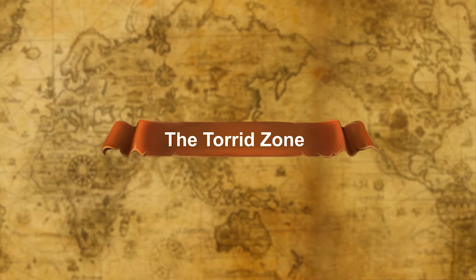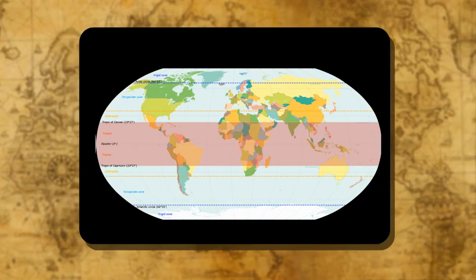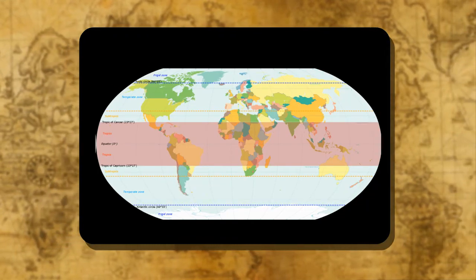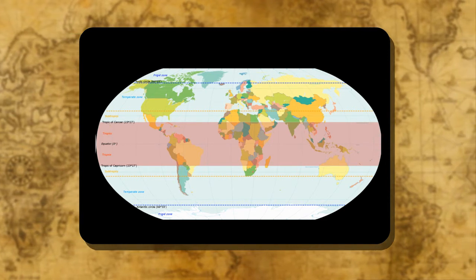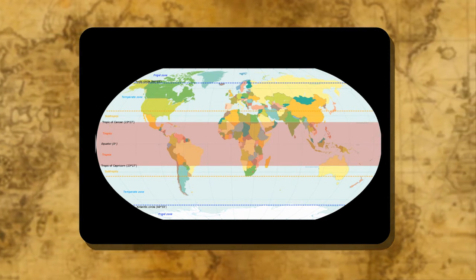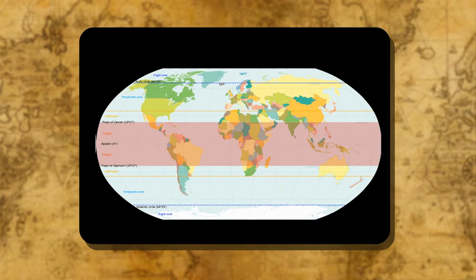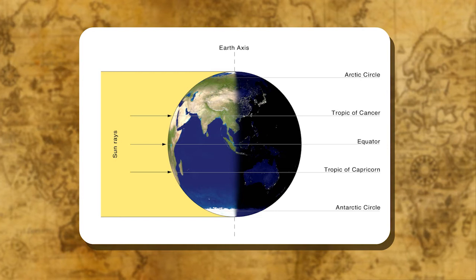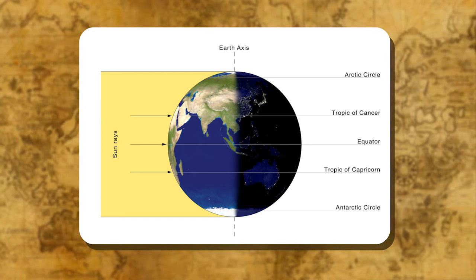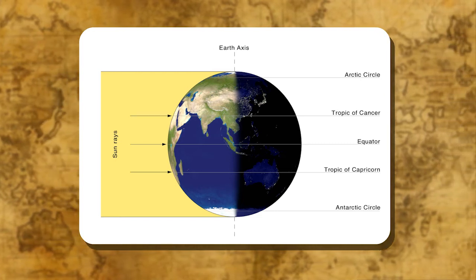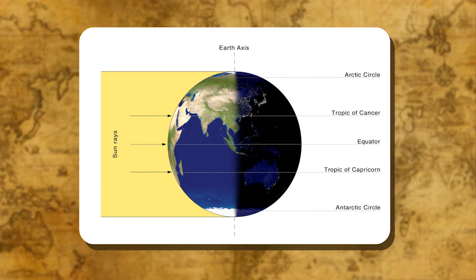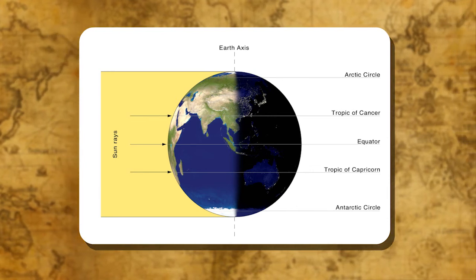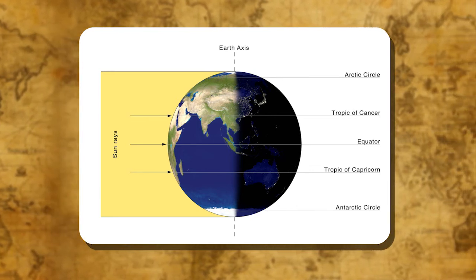The Torrid Zone: It stretches between the Tropic of Cancer (23 and a half degrees north) and the Tropic of Capricorn (23 and a half degrees south). It is the widest of the five zones. Within this zone, the sun is overhead twice a year and the length of the day is practically the same. That is why it is the hottest part of the earth. Half of India lies in this zone.